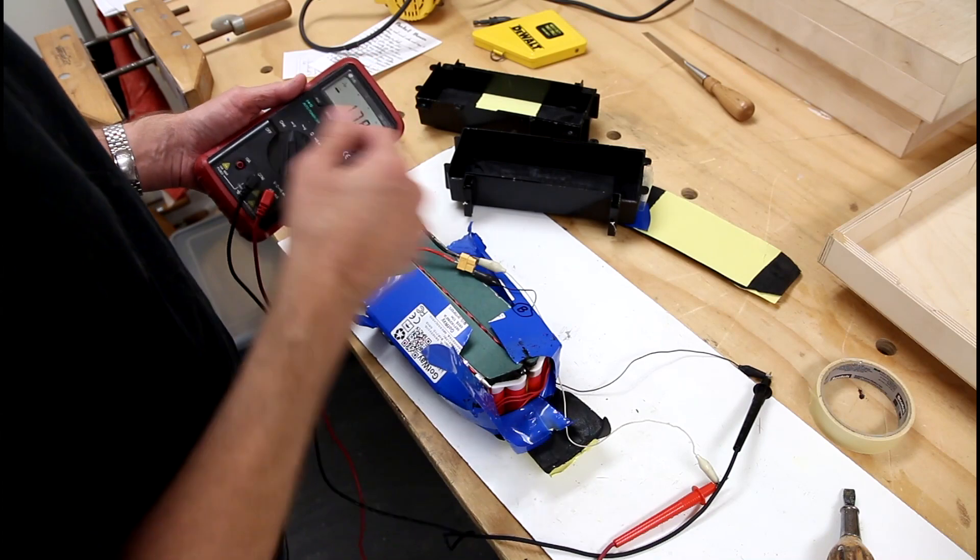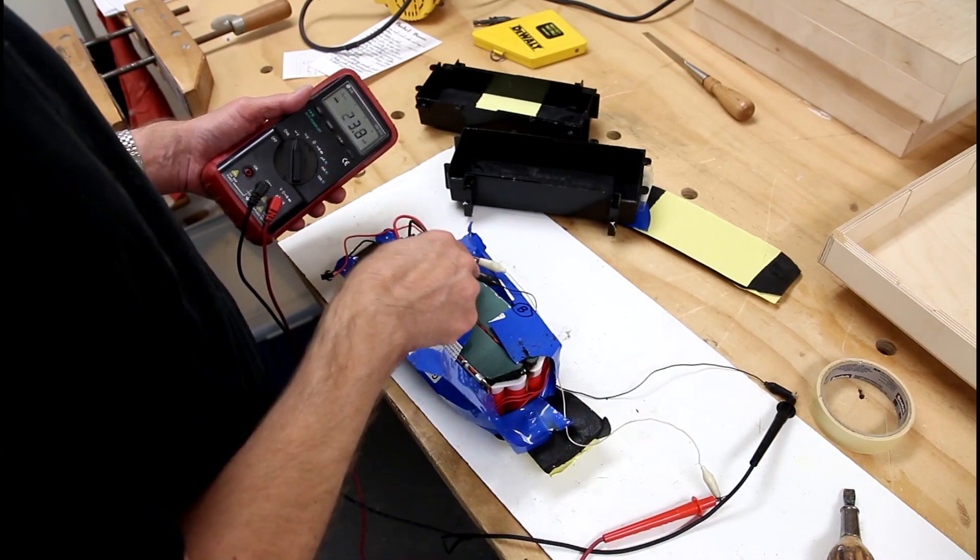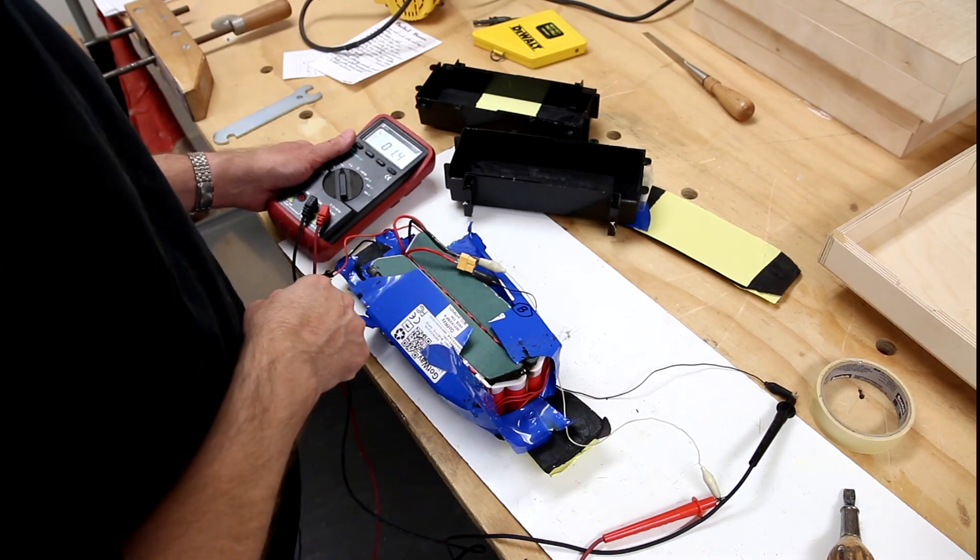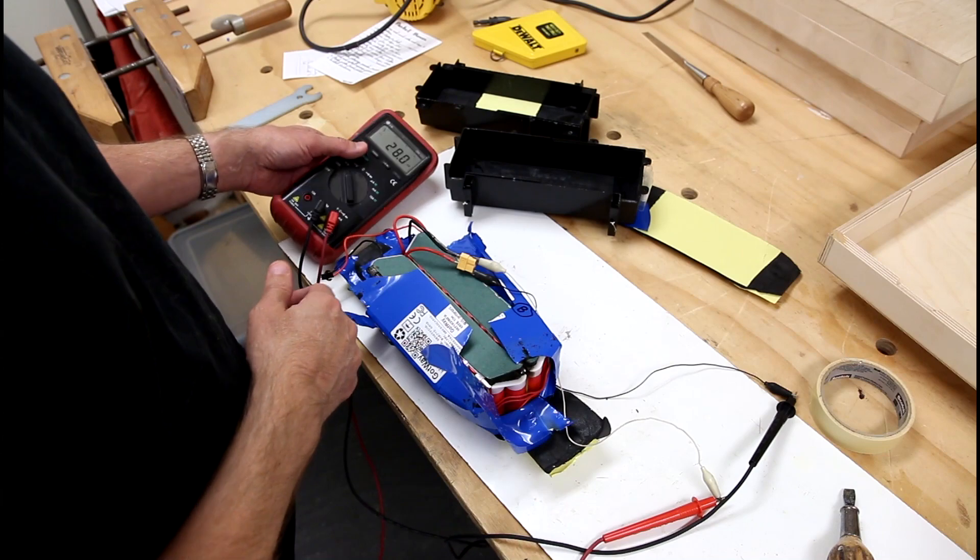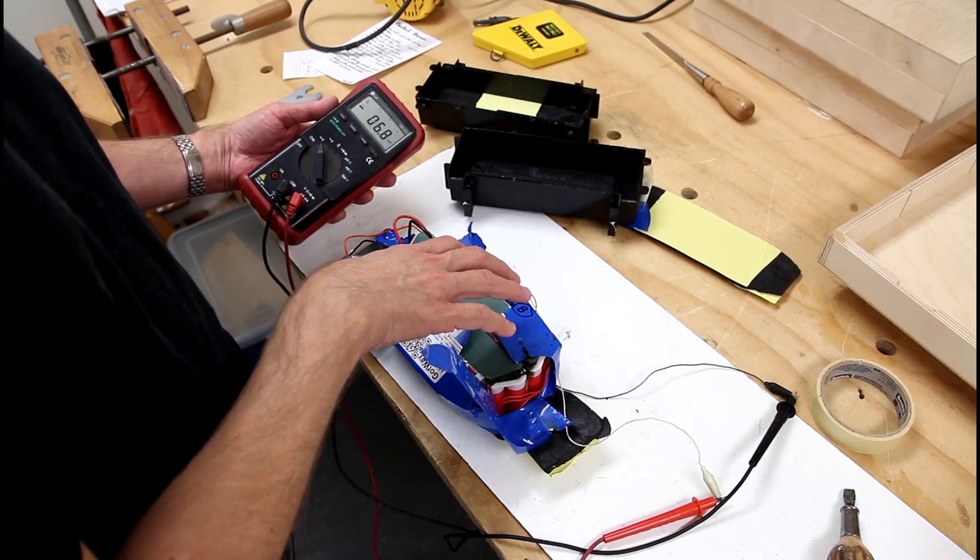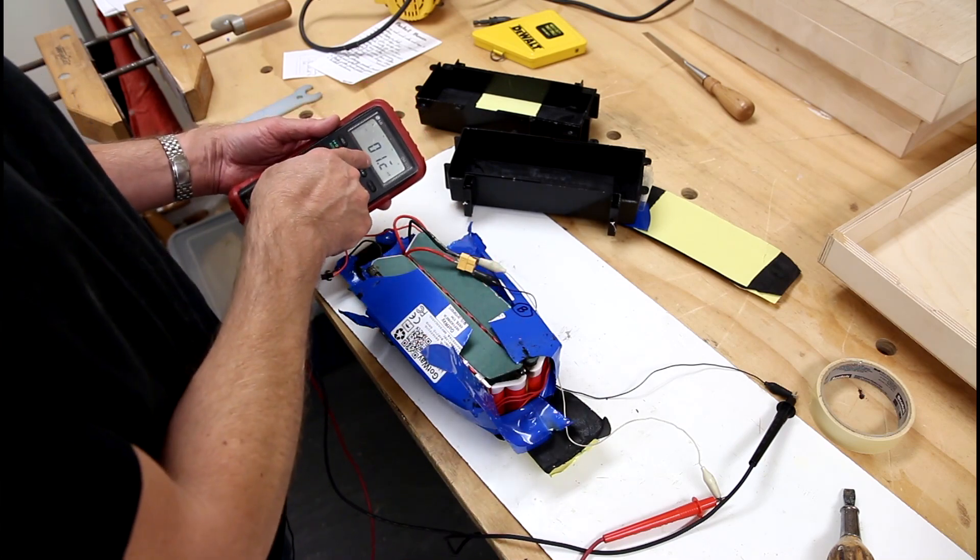So I have my meter hooked up to these clips which are hooked up to the connector from the battery and nothing. But before I disassembled the battery, when I moved the battery sometimes or squeezed it in a certain way I'd get 80 volts.